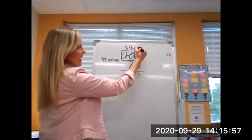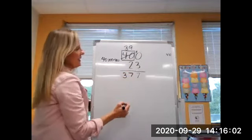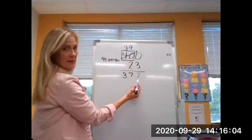10 take away three is seven. Nine tens take away two tens is seven tens. Three hundreds take away no hundreds is 377 altogether.